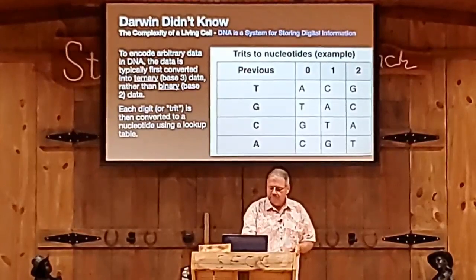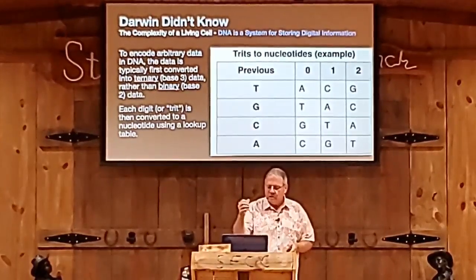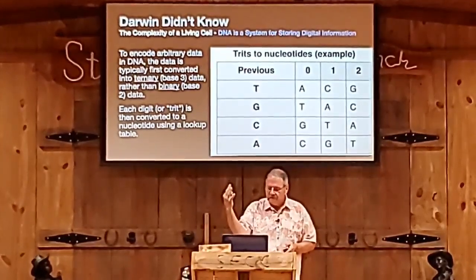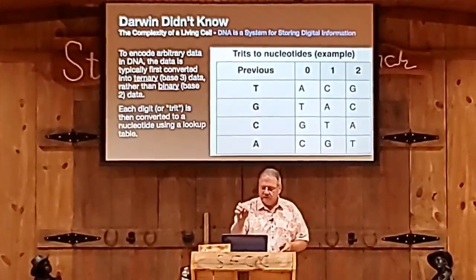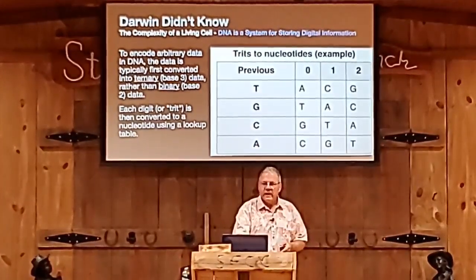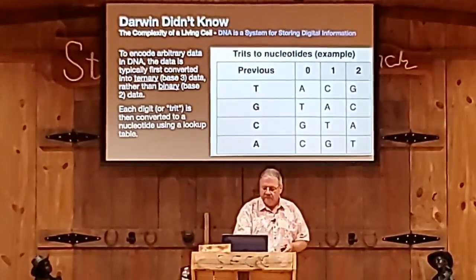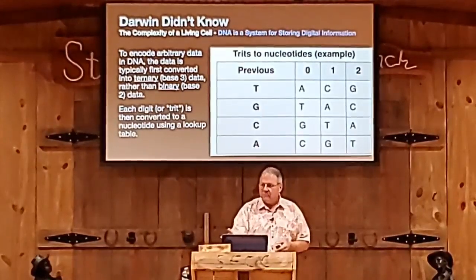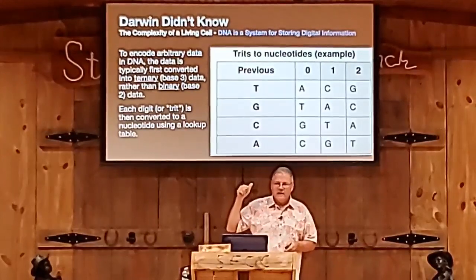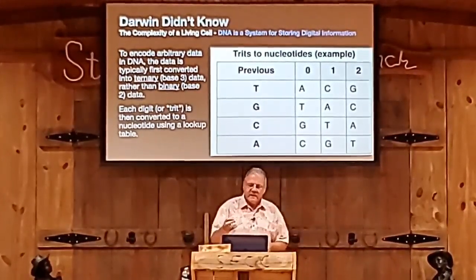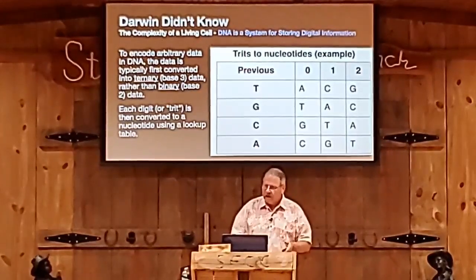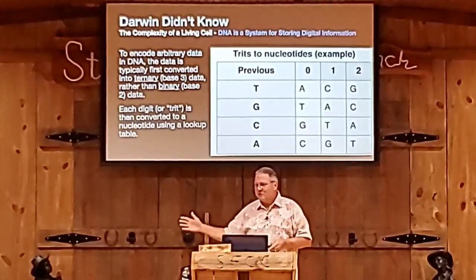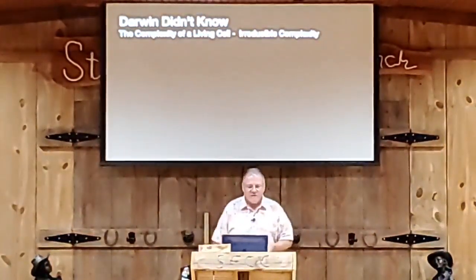Based on the previous base — like if the previous base were a T — you encode the information into a zero, one, or a two, so three digits, which is called a trit — a trinary digit. Based on the previous digit, if the new value coming in is a zero, then the next base used would be adenine. It's just fascinating that there's this mechanism inside our bodies capable of storing so much information so efficiently that it completely blows away the next closest storage system. And it all came out of the primordial ooze.